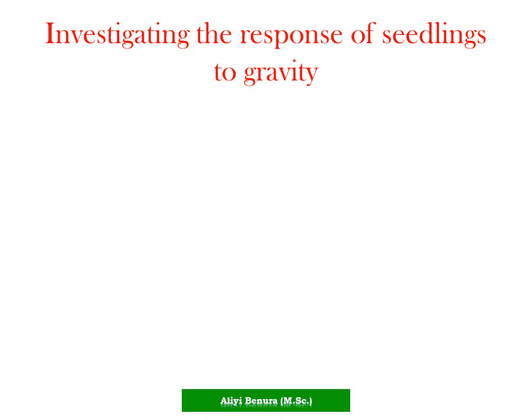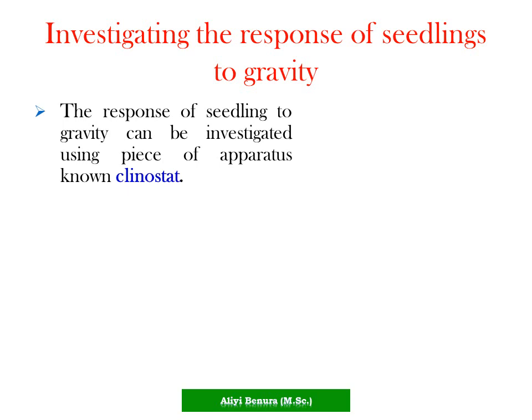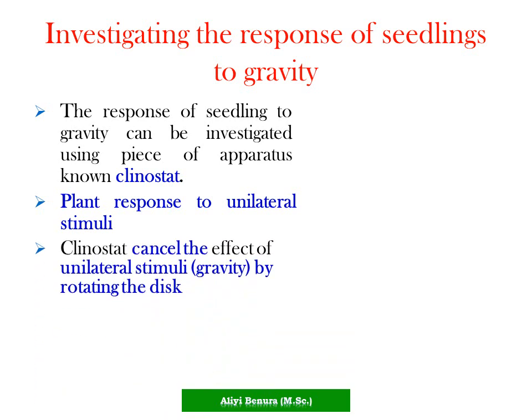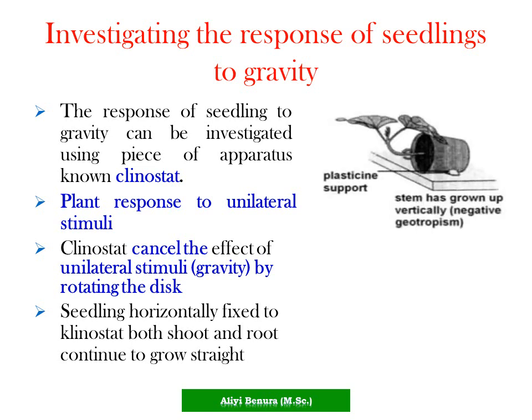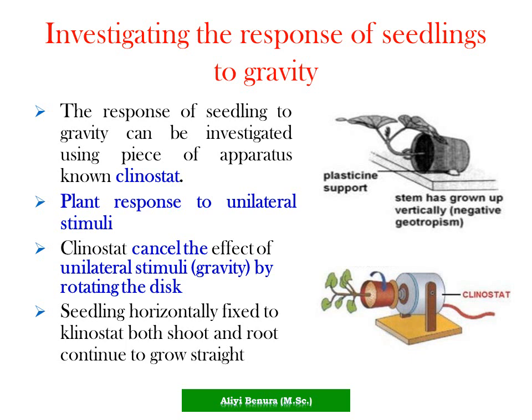Investigating the response of seedlings to gravity can be done using an apparatus known as a clinostat. Plants respond to unilateral stimuli. Clinostats cancel the effect of unilateral stimuli, such as gravity, by rotating the disc. The seedlings are horizontally fixed to the clinostat, and both shoot and root continue to grow straight. When rotated, the response is cancelled.